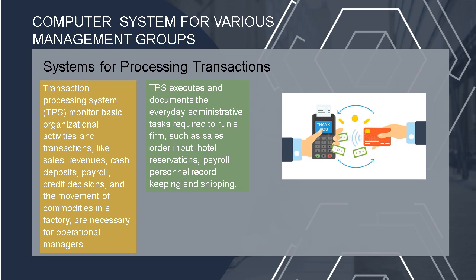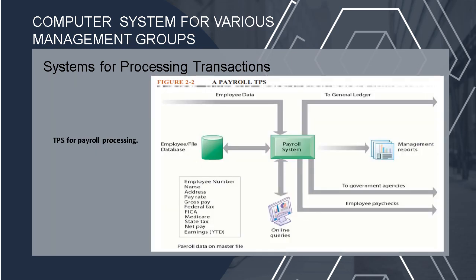TPS executes and documents the everyday administrative tasks required to run a firm, such as sales order input, hotel reservations, payroll, personal record keeping, and shipping. Figure 2.2 shows a TPS for processing payroll. The money paid to employees is tracked by a payroll system. A single transaction for this system is an employee timesheet that includes the name, social security number, and number of hours worked each week. As soon as the transaction is entered into the system, it updates the master file — the organization's ongoing repository for personal data. The system's data are integrated in various ways to provide reports useful to management and governmental organizations as well as to pay employees.